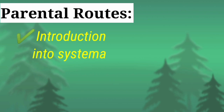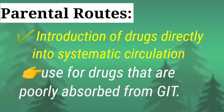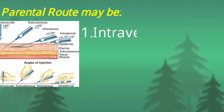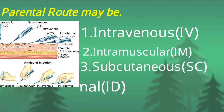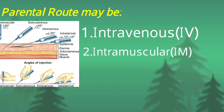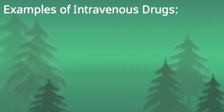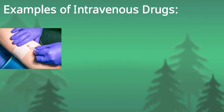The parenteral route is the route in which the drug is directly administered into the systemic circulation. This is used when the drug is poorly absorbed from the GI tract. The parenteral route may be intravenous, intramuscular, subcutaneous, or intradermal. Examples of intravenous drugs are vancomycin, heparin, and ceftriaxone. I have also shown pictures of these routes.